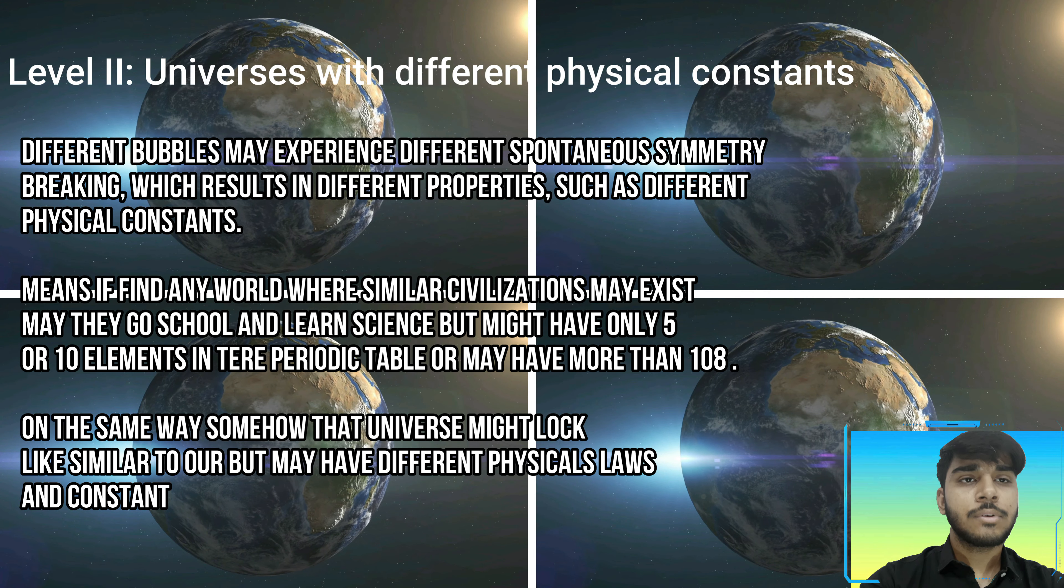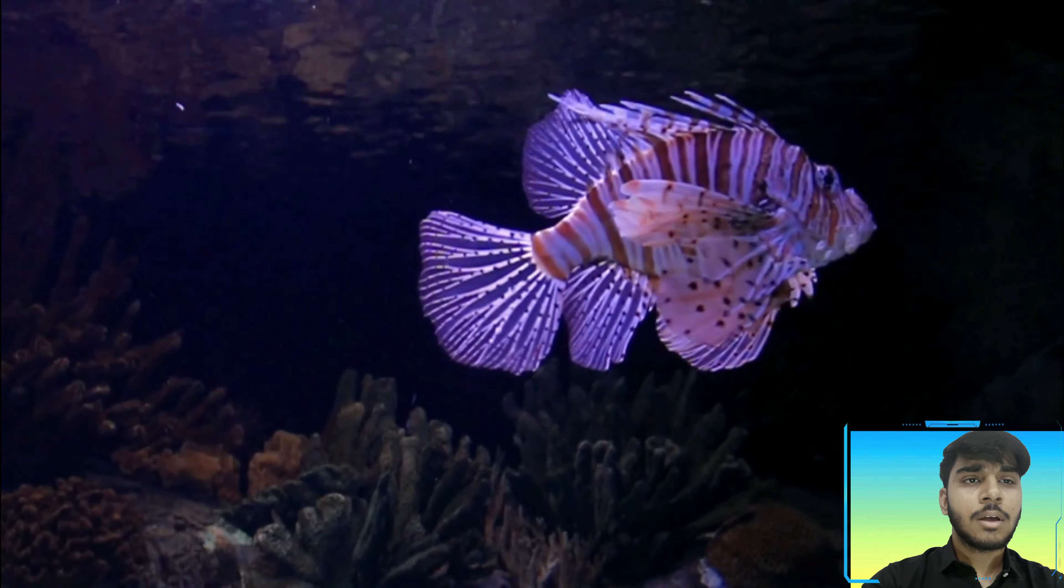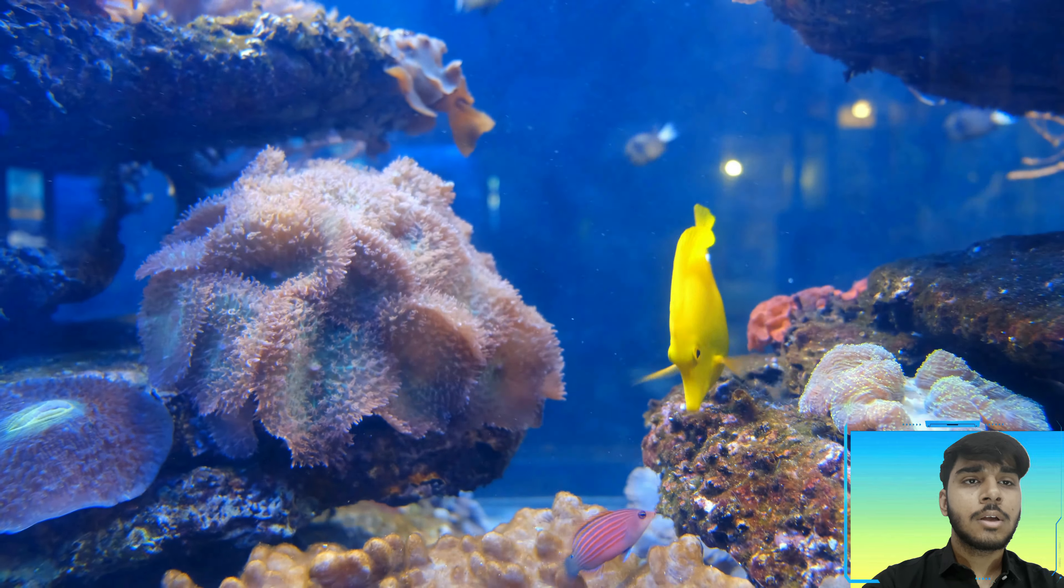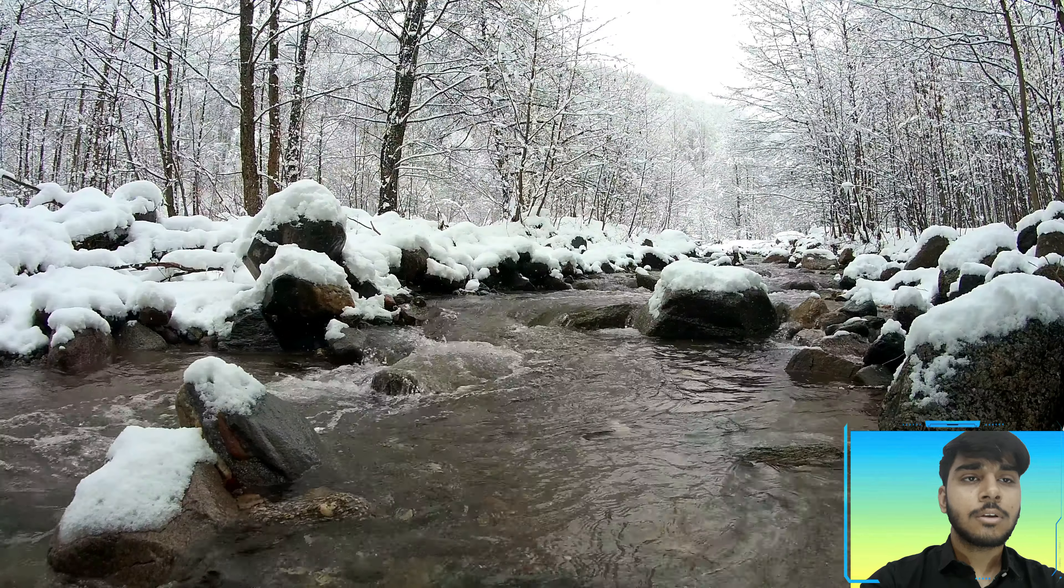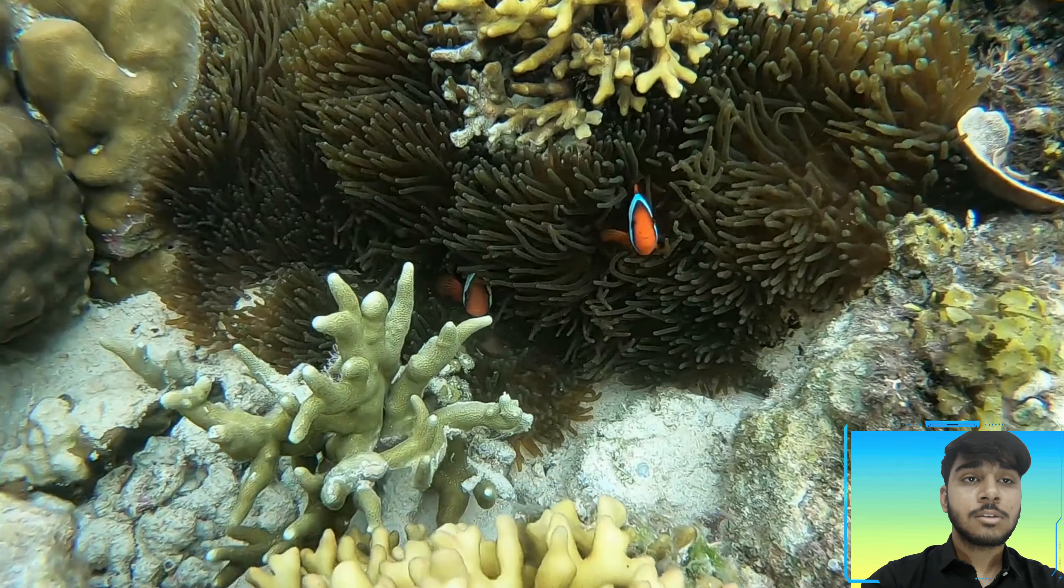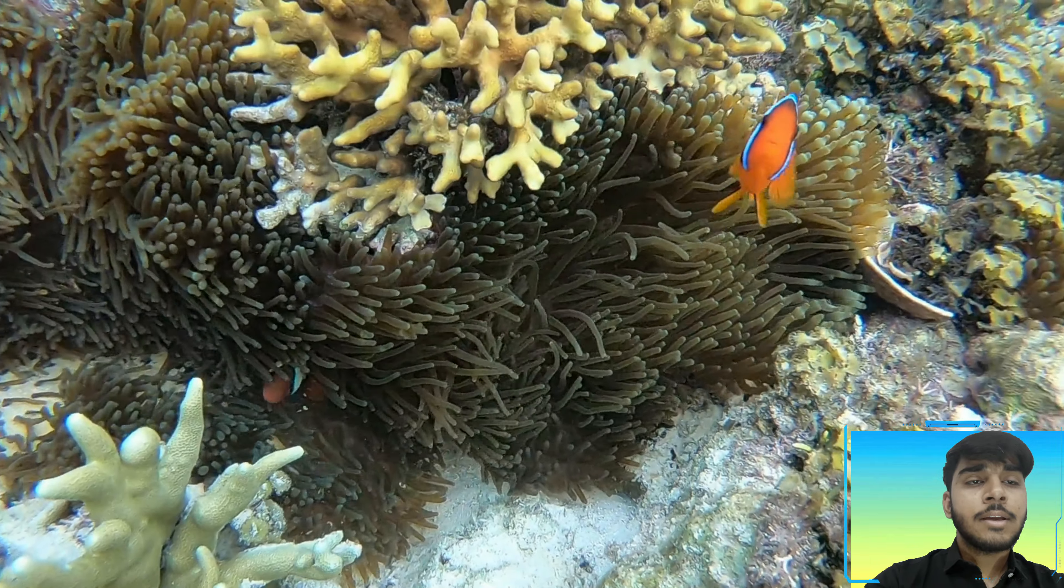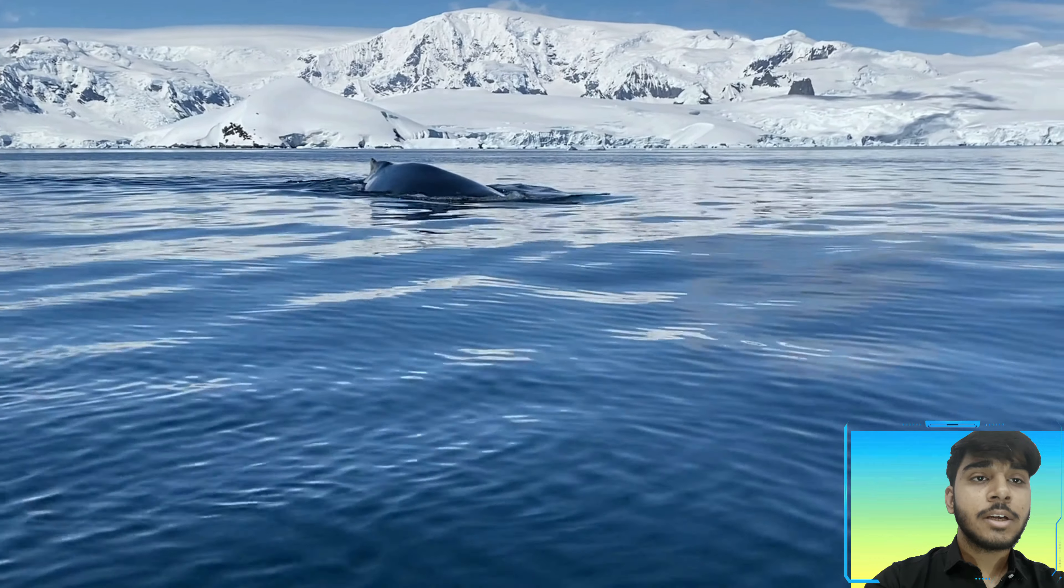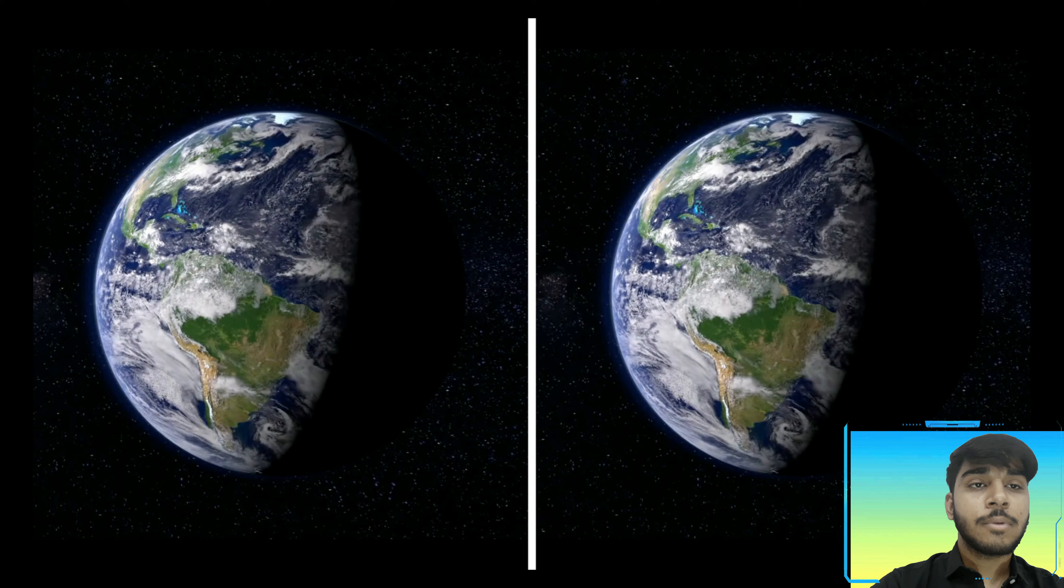If we consider an example of a fish, we all know that fish live in water, but water has its own characteristics - hot water has different characteristics than cold water, and ice water has different characteristics than hot water and normal water. But we all know that fish can be found in all these conditions and all these waters. In the same way, if we find any similar or identical universe to ours, their physical constants may be different. No matter if their laws are similar, their constants may be different.